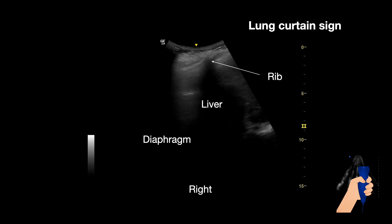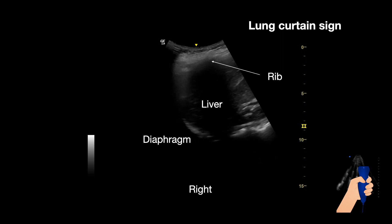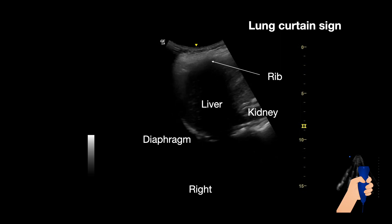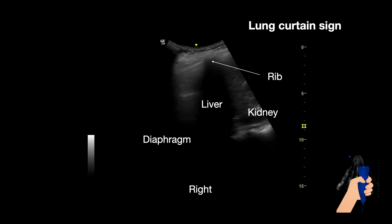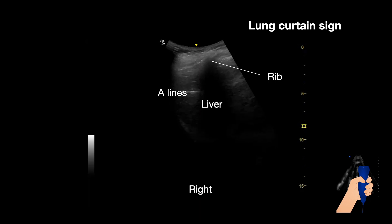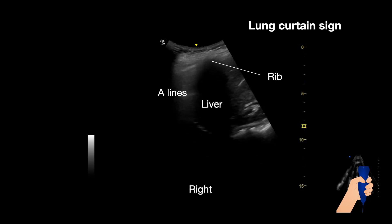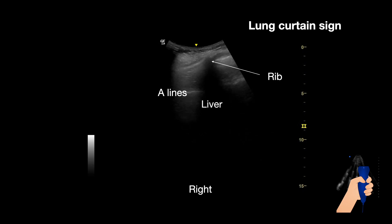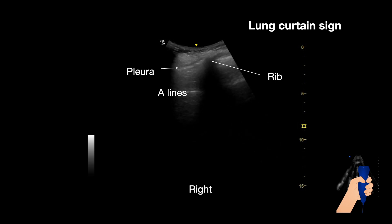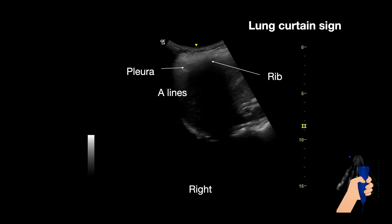The liver is below the diaphragm and is also getting in and out of our visual field. The kidney is getting in and out of our visual field, and this is because of normal breathing. Then we can see A lines, which are produced because of the air of the lung — a normal aerated lung. And lastly, we can see the pleura normally sliding.